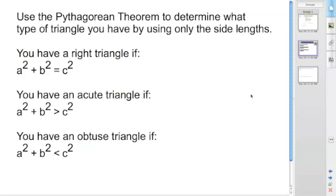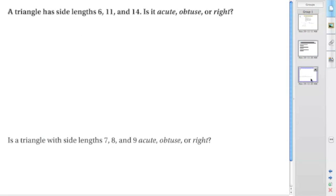Now let's do some example problems. We have a triangle with side lengths 6, 11, and 14. Is it acute, obtuse, or right?